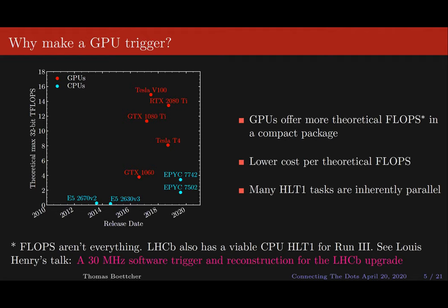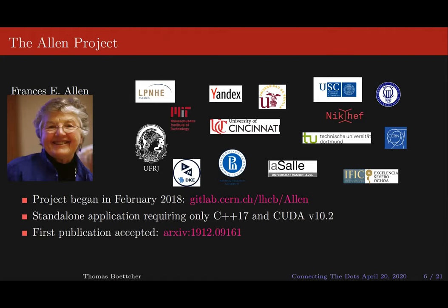I don't want to give the false impression that this is not possible on CPU — there's been a ton of work at LHCB to create a viable CPU HLT1 for run three. But this brings us to the Allen project, named after Frances E. Allen, a famous computer scientist who did a lot of work in compiler optimization and parallelization. This project began in February 2018, you can find it on GitLab, and it's a standalone application requiring only C++17 and CUDA 10.2. We recently had our first publication accepted, with a preprint on the arXiv.